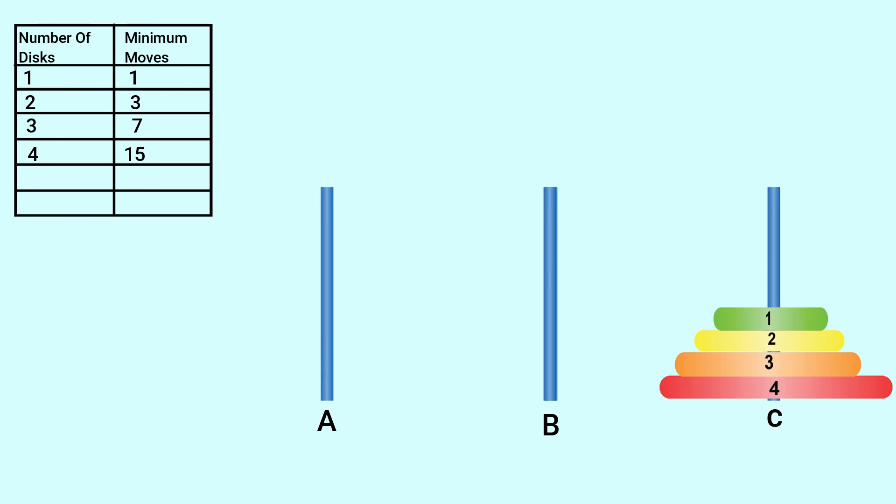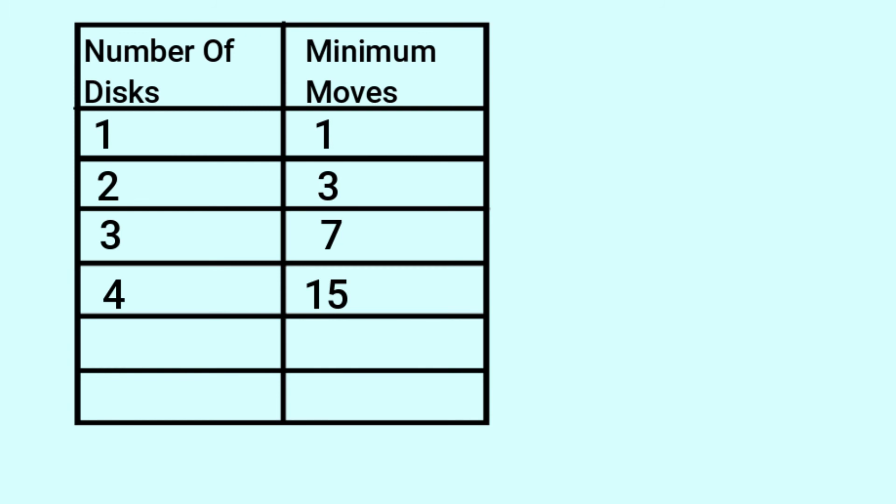Now let us try to find any common pattern from these numbers. If we look at these numbers, they are actually close to powers of 2. The powers of 2 are 2, 4, 8, 16, and so on. If we look at these numbers, then these numbers are always 1 less than the power of 2.